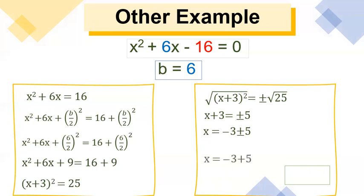Let's find the roots of the equation. First, x is equal to negative 3 plus 5 and x is equal to negative 3 minus 5. Adding negative 3 plus 5 gives us the answer 2. Since they are both negative, adding negative 3 and negative 5 gives us the answer negative 8.